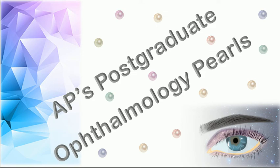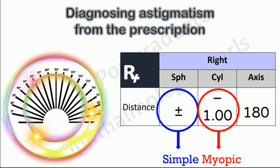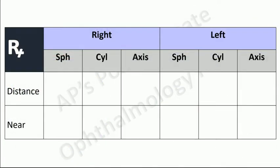Hello viewers, welcome to AP's postgraduate ophthalmology pearls. As postgraduates, you are expected to be able to diagnose the type of astigmatism from the prescription. It can be derived of course, but sometimes the stress of an examination can cause one to go blank. Follow the steps, tips and examples given here and you will be able to diagnose the type of astigmatism even under extreme pressure.